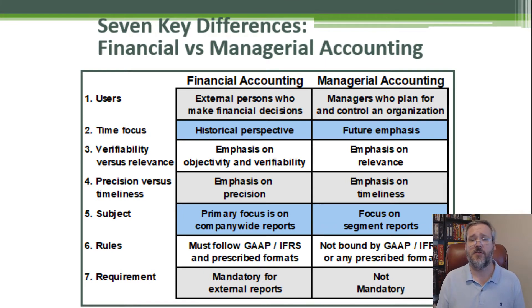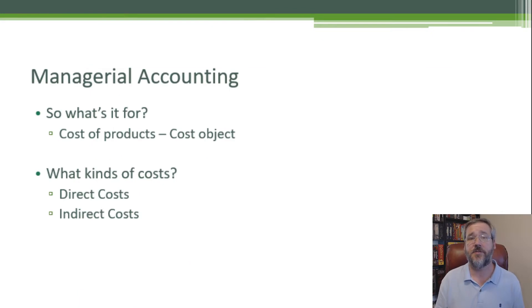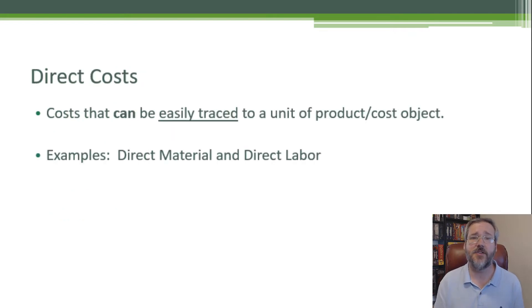A lot of what managerial is used for is determining the cost of products. Any cost object is going to be whatever we wish to know the cost of. Typically this is going to be our products. Our products absorb two different types of costs: direct costs and indirect costs. Direct costs are costs that can be easily traced to a unit of production or to whatever that cost object is. Examples of direct costs are direct materials and direct labor.